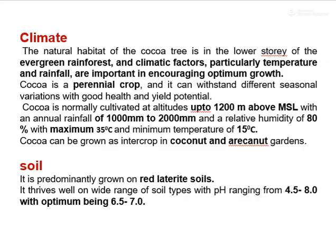Climatic requirement for cocoa: The natural habitat of cocoa tree is in the lower storey of the evergreen rainforest, and climatic factors, particularly temperature and rainfall, are important for encouraging optimum growth. Cocoa tree is a perennial crop and can withstand different seasonal variation with good health and yield potential. Normally, cocoa is cultivated at an altitude of about 1,200 meters above mean sea level with annual rainfall of 1,000 to 2,000 mm. The relative humidity is 80%, with a maximum of 35 degrees Celsius and minimum of 15 degrees Celsius of temperature.